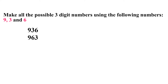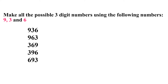Next, we will start with the second number. Here, it is 3. So, 369. Now, interchange the last two digits of 369 to get 396. Now, it is time to begin with 6. So, 693.